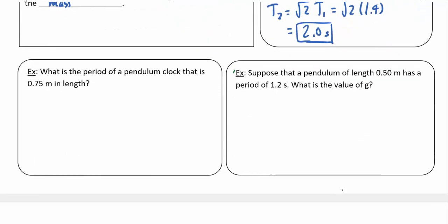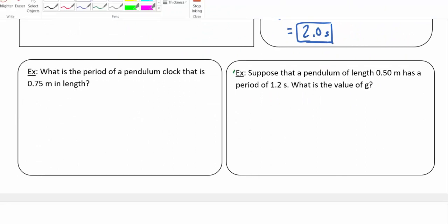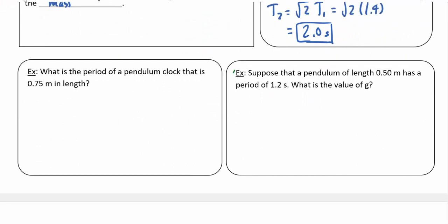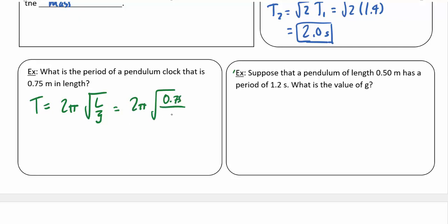What is the period of a pendulum clock with a length of 0.75 meters? The period equals 2π times the square root of L over g, which is 2π times the square root of 0.75 divided by 9.8 — assuming this clock is on Earth. This works out to approximately 1.7 seconds.